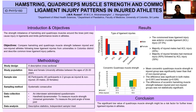My objectives are to compare hamstring and quadriceps muscle strength between injured and uninjured athletes following knee ligament injuries from universities in the Colombo district, and to describe common knee ligament injury patterns among them.